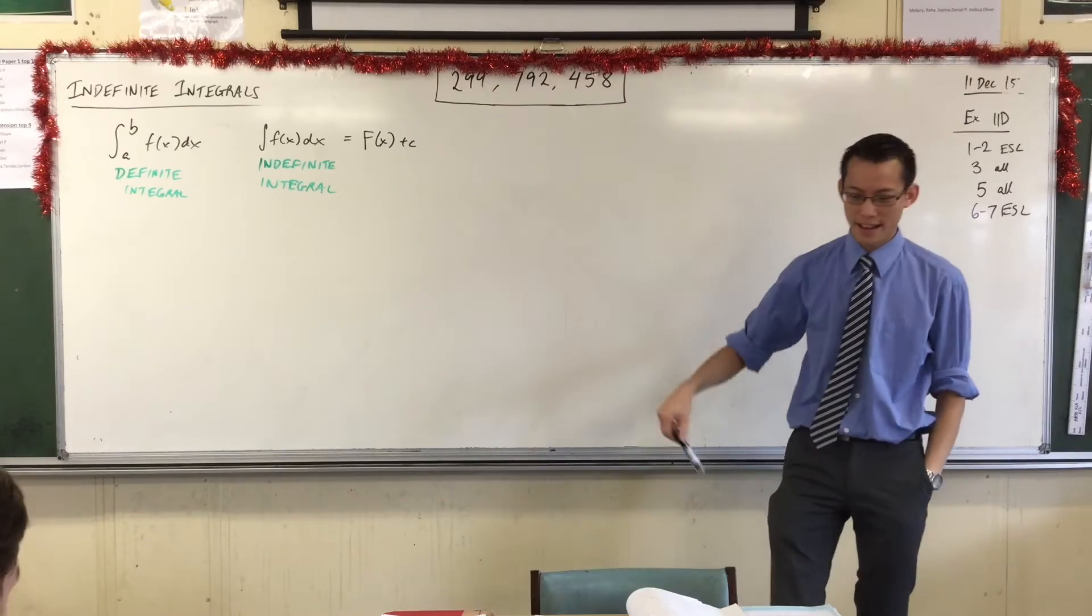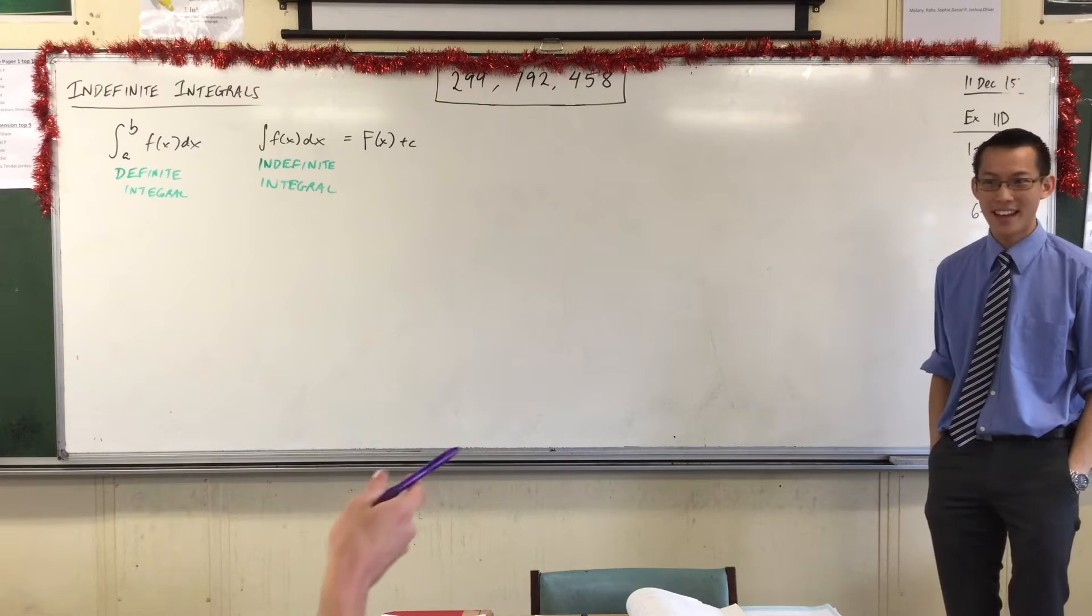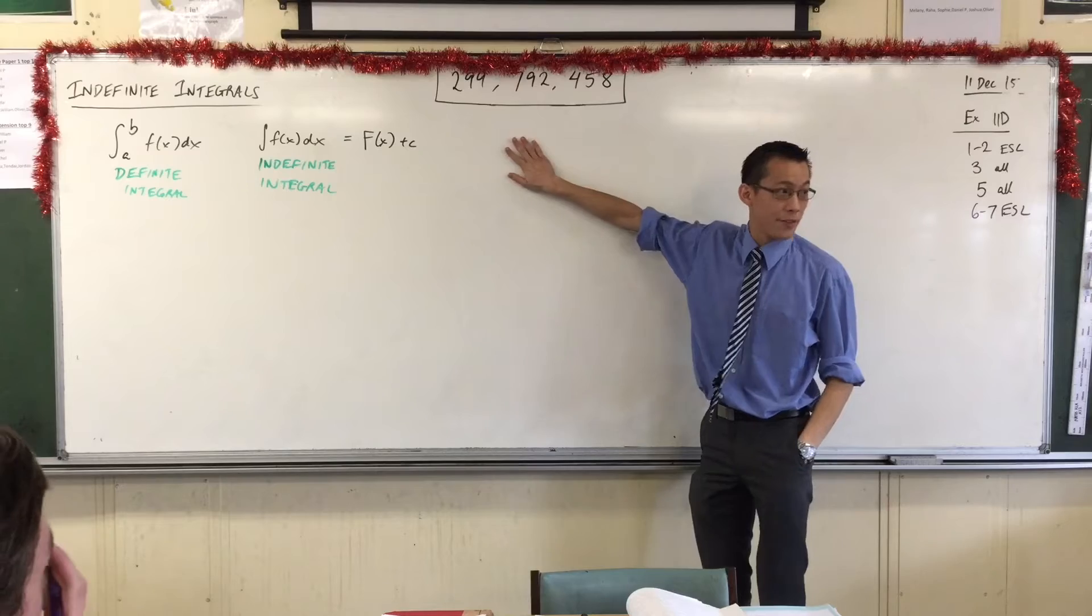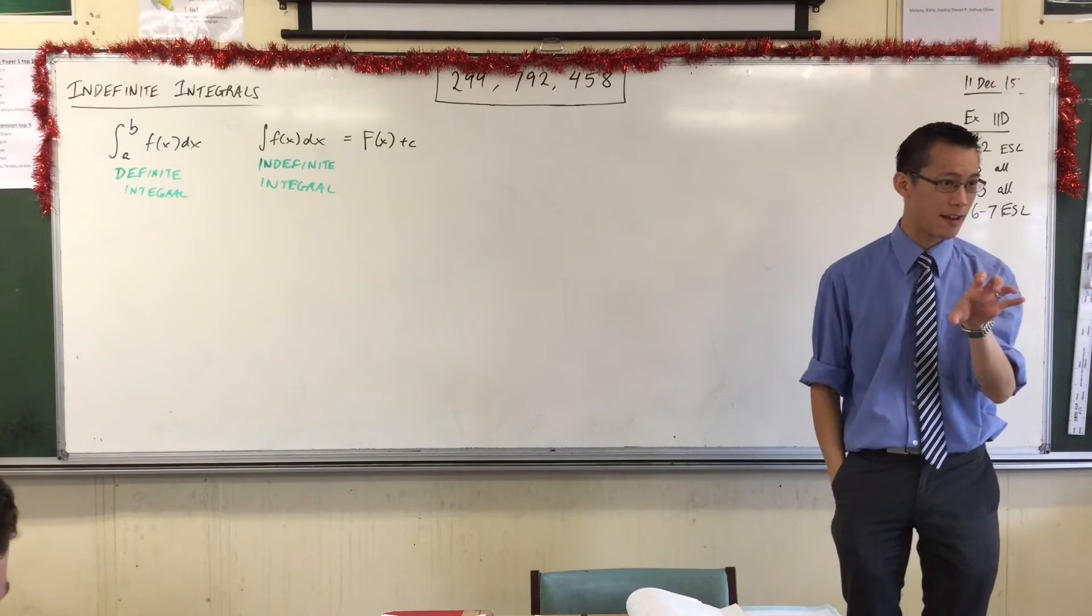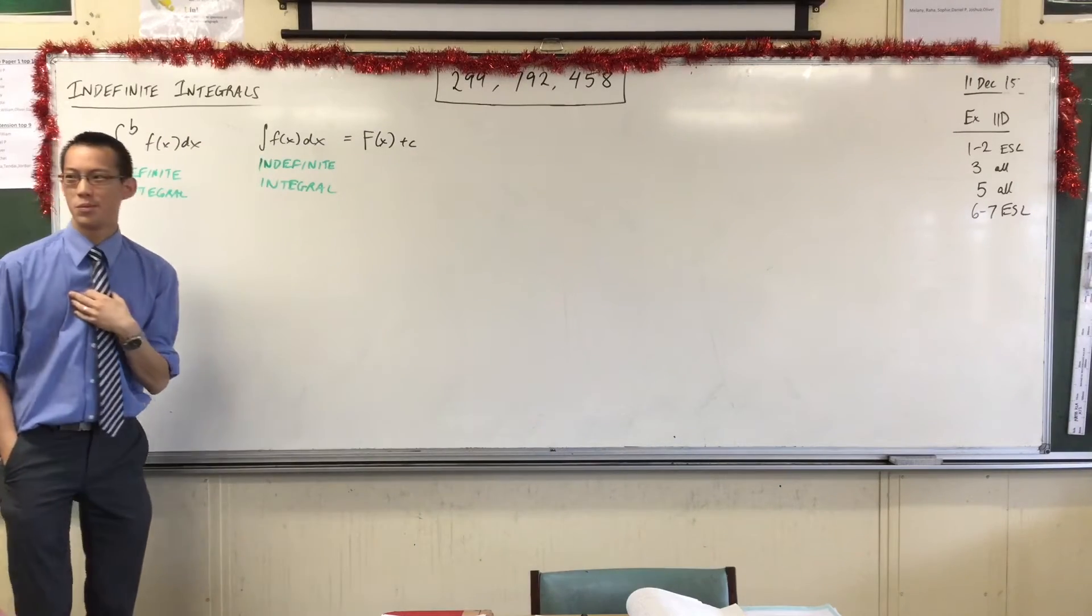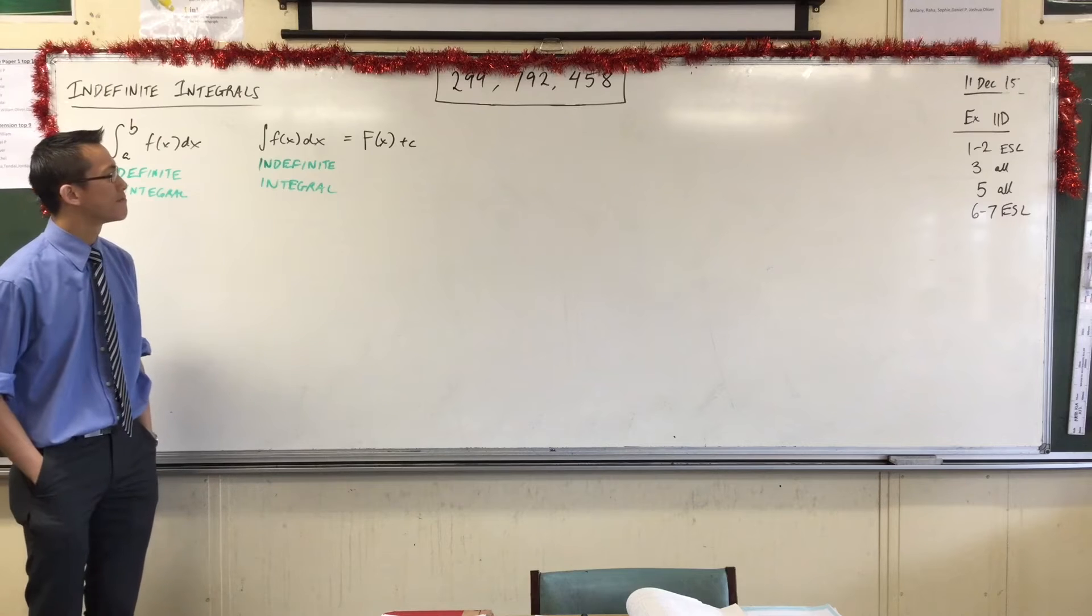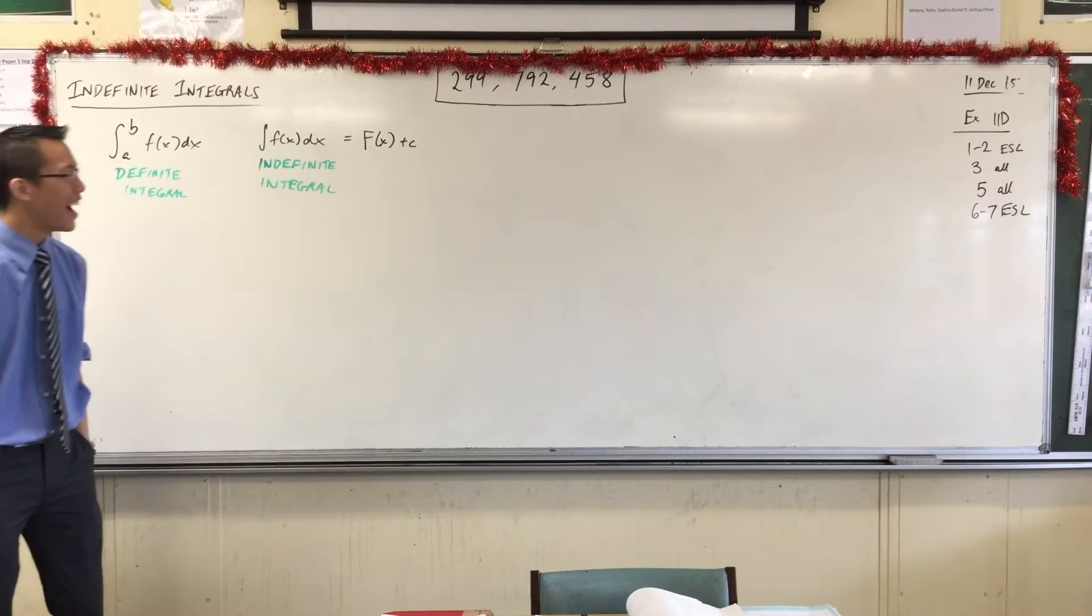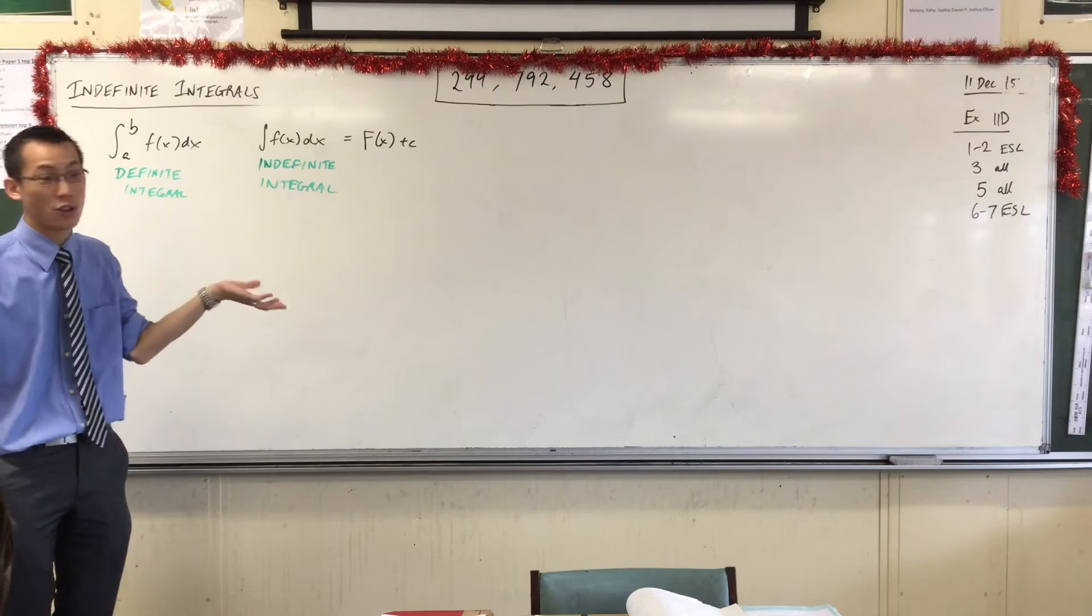And to answer that question, I want to point you to this number. Now, I hope a lot of you recognize this number. What is this number? A big number. Does anyone recognize the speed of causality? It's the speed of... Now, I'm so glad some people know the difference. The traditional name for this, in meters per second, is the speed of light. 299,792,458 meters per second.